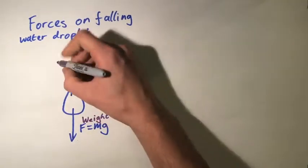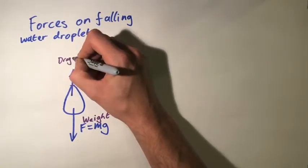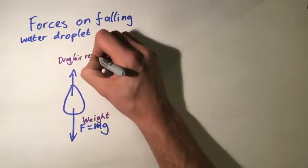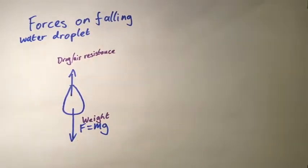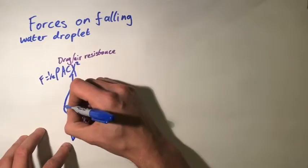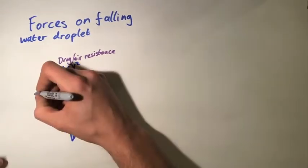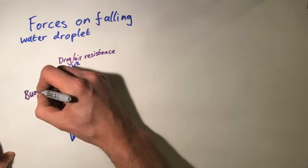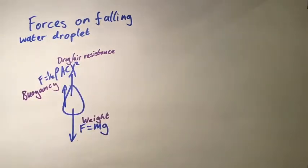Next up, we need to consider the upward force on the droplet as it's falling. The first one of these is the drag force or air resistance. As the droplet is falling through the air, there's also an upwards force caused by buoyancy. This buoyancy is the same upward force that causes a helium balloon to rise when you let go of it.